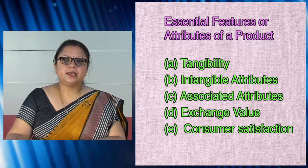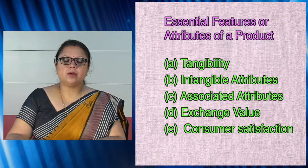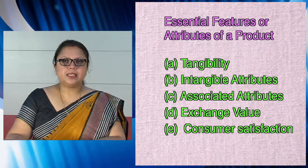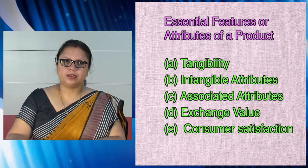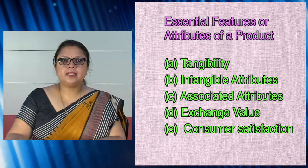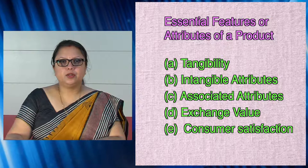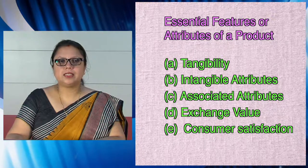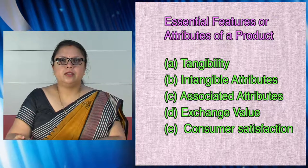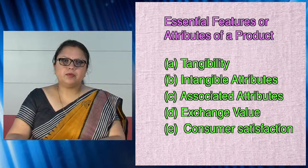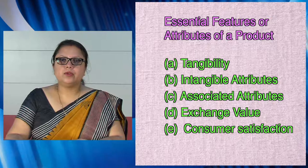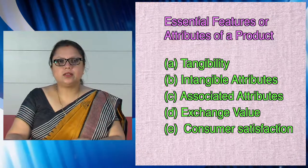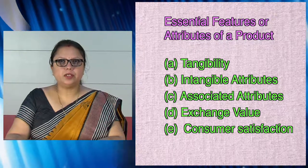There are different characteristics or attributes of a product. The first essential attribute is tangibility. To be a product, it should have a tangibility character such that it can be touched or seen. When we go to market and purchase something, we touch the product and check the product. That is considered as the tangibility of the product.